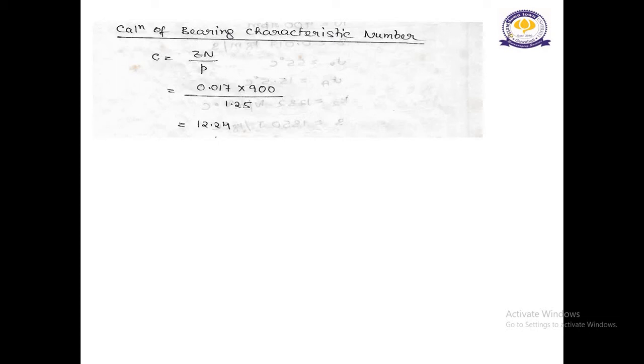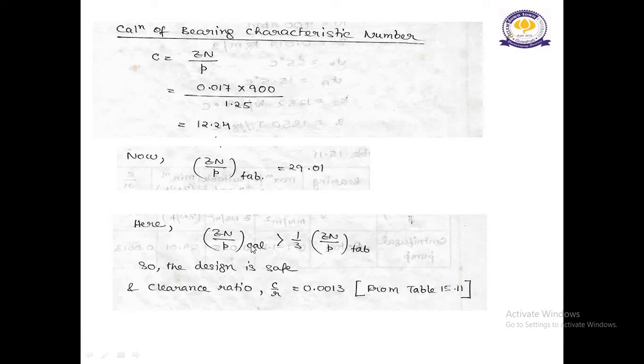After we have confirmed that the design is safe, we need to find out the bearing characteristics number. It will be calculated as C equal to Zn divided by P. The value of Z is given as 0.017. Capital N is given as 900. And small P equal to 1.25, which is after calculation we got as 12.24. Now, Zn divided by P tabulated value is 29.01. Here, Zn divided by P calculated value is very greater than 1 by 3rd of Zn divided by P tabulated value. From this criteria, we can say that the design is safe. And, our clearance ratio will be C by R equal to 0.0013, which is also being taken from table 15.11 from Design Data Handbook.